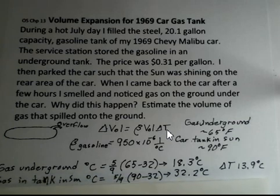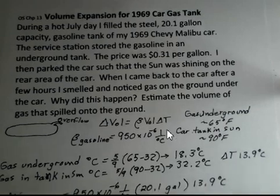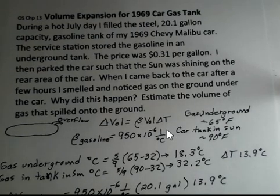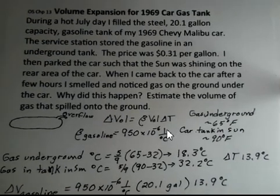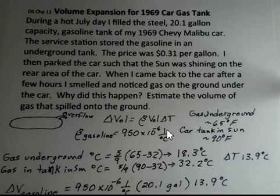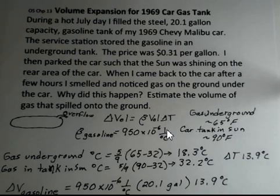but first I need to change Fahrenheit into Celsius. So those calculations are 5/9 times the Fahrenheit temperature minus 32, and those numbers are shown there, 18.3 degrees Celsius for the gas underground in the tank, and 32.2 degrees Celsius for the gas in the tank of the car. The change in temperature of the gasoline experienced then was 13.9 degrees Celsius.